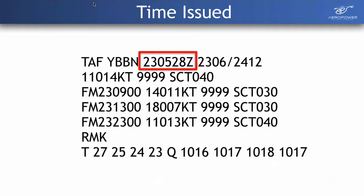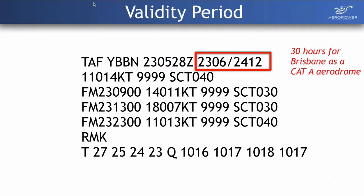The second section is the date and time the forecast was created. These are always in Zulu — Greenwich Mean Time or Universal Time. Zero o'clock in Greenwich means it's 10 o'clock here in Australia. So this one was issued on the 23rd of February at 0528 hours Zulu — that's just the time the actual forecast was issued. You'll need to convert it to local time; on the East Coast we just add 10 hours.